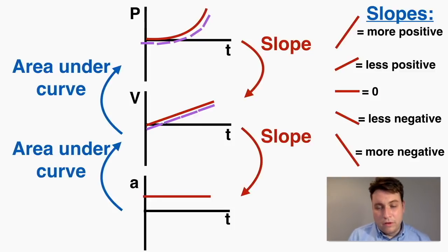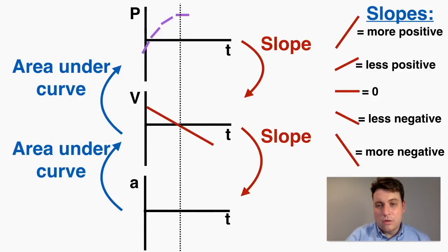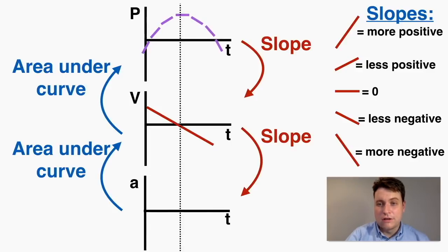Now let's try converting from a velocity graph to both of the other two types. Starting with position — because that's a bit more difficult — since velocity is the slope of a position graph, the slope starts very positive and then goes down to zero, then becomes very negative, so that's what my position-time graph would look like. Remember, the velocity graph doesn't tell you where to start on a position graph in terms of position. Going down to acceleration, the slope of that velocity graph is constant and negative, so the acceleration is constant and negative.